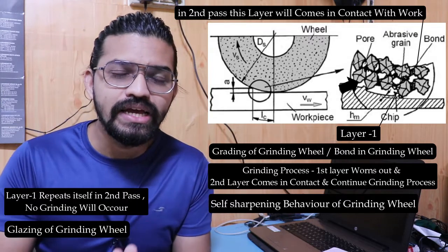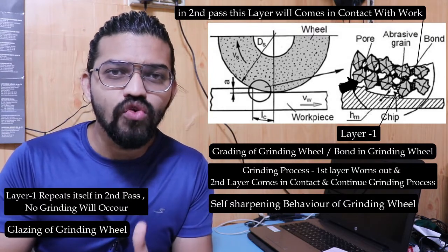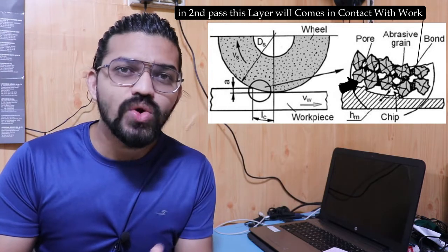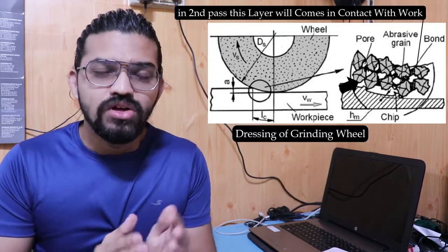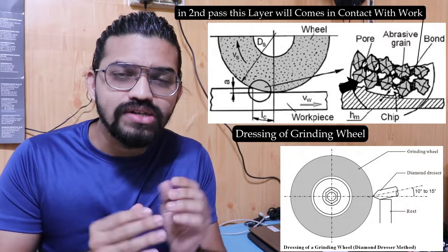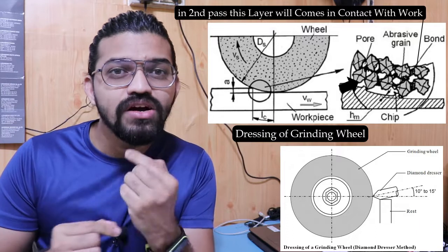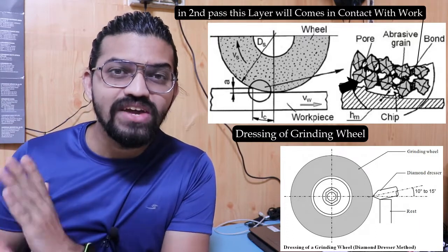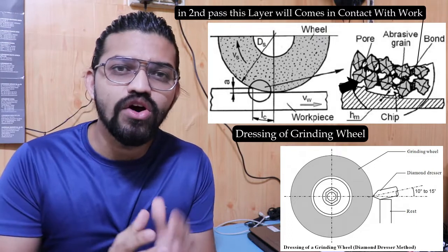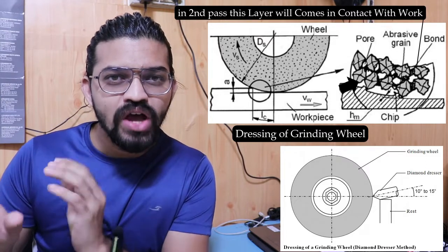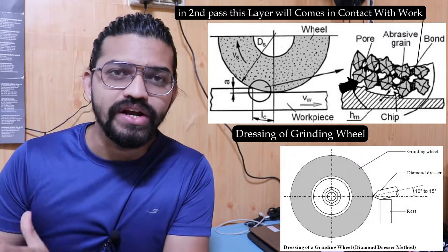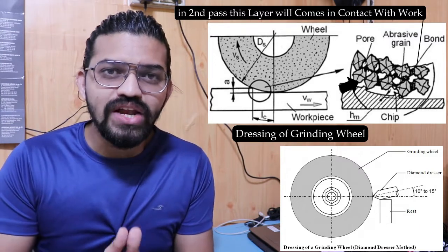After glazing, material won't get removed and machining cannot be carried out. In that scenario, we need to perform dressing of the grinding wheel. In dressing, a single-point cutting tool is pressed against the rotating grinding wheel for about 15 to 20 minutes. All the worn abrasives in the grinding wheel get removed and a fresh layer is obtained, making the wheel ready for grinding again.